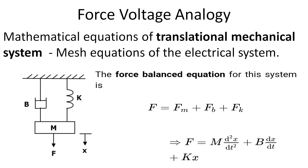Let's see the force voltage analogy. In force voltage analysis, the mathematical equations of the translational mechanical system are compared with the mesh equations of the electrical system. If we consider a translational mechanical system, the force balance equation is f equals f_m plus f_b plus f_k — force due to mass, force due to the damper, and force due to the spring constant. Combining all these, f equals m·d²x/dt² plus b·dx/dt plus k·x.